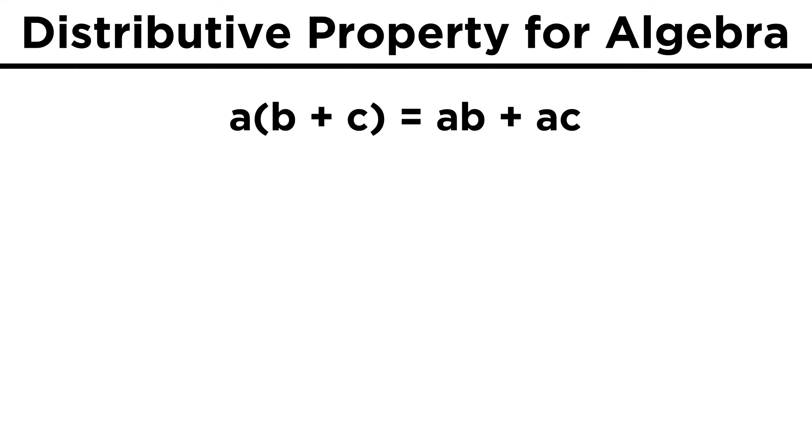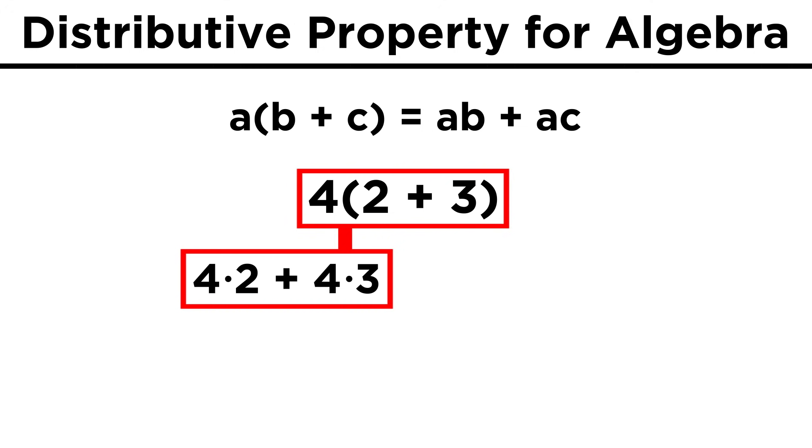The most important of these properties will be the distributive property. This told us how a number could be distributed across a parenthetical sum or difference. This didn't matter too much for arithmetic, because four times the quantity of two plus three is certainly equal to four times two plus four times three, but there was nothing stopping us from adding two and three first, and then multiplying by four.